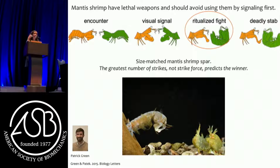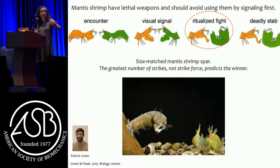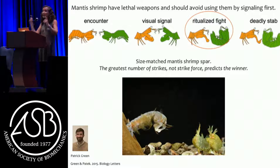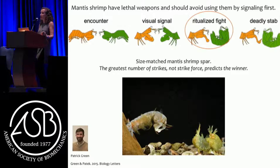They do not win by having the greatest force - they win by having the greatest number of strikes. What they do is hit back and forth between their hammer and a specialized piece of armor. The picture shows an animal coming in with its hammers ready to fire toward this specialized armor, the telson, and they hit back and forth until they resolve the dispute - using number of strikes, not their maximum capabilities. They will eventually move to a deadly stab, but very rarely. They prefer to spar.